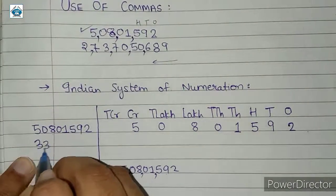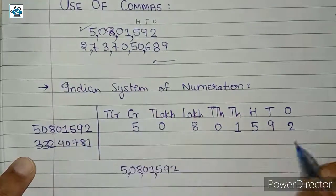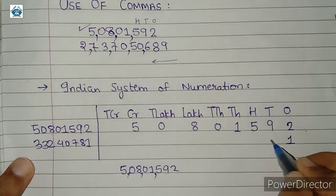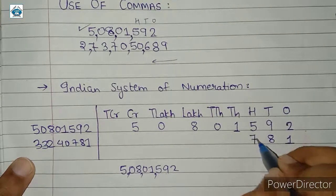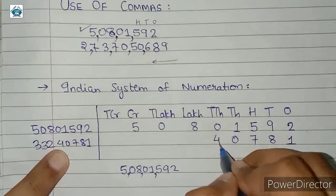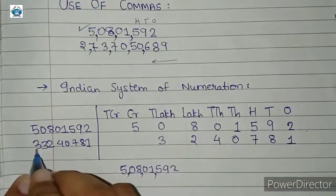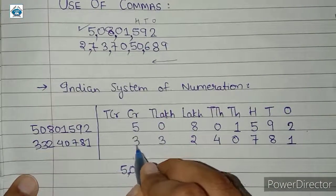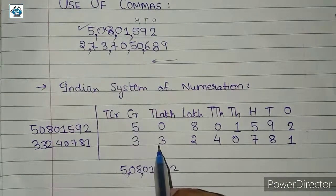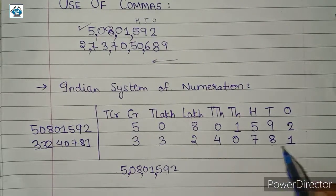Consider another number. Let us arrange its digits in the placement boxes. 1 will come in the ones place, 8 in the tens place, 7 in the hundreds place, 0 in the thousands place, 4 in the ten-thousands place, 2 in the lakhs place, 3 in the ten-lakhs place, and 3 in the crores place. So this number is read as 3 crore 32 lakh 40,781.